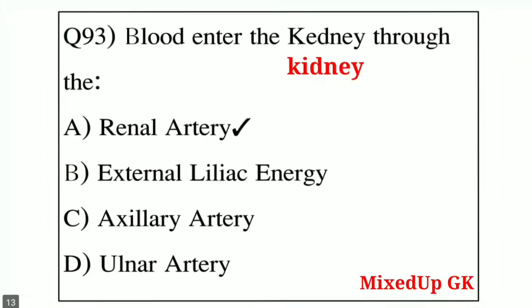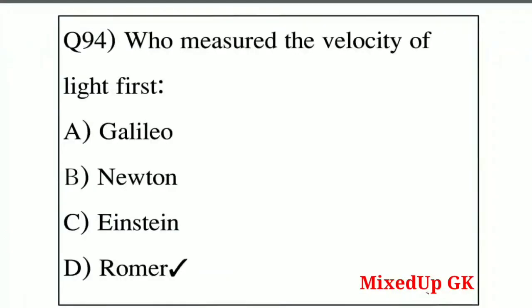Question number 93: blood enters a kidney for filtration through — Option A: renal artery, Option B: external iliac artery, Option C: auxiliary artery, Option D: ulnar artery. The correct answer is Option A — renal artery. Blood enters the kidney through the renal artery.